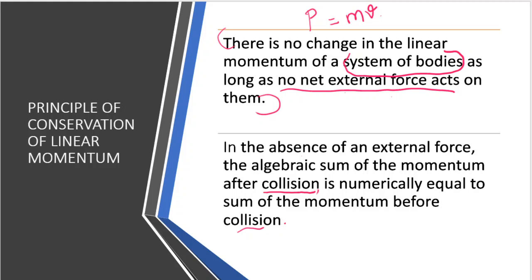Before we look at the proof, let us understand what we are going to do. We will consider a system of bodies — more than one moving body. We will conduct a collision experiment. Collision means one body hits another. We will calculate the algebraic sum of momentum before collision and after collision, and prove they are equal. This is done in the absence of external force.